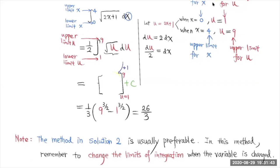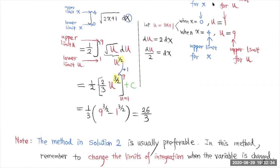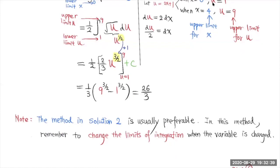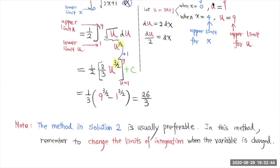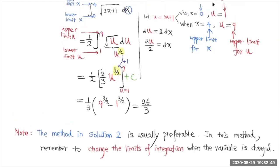Now after you have done this, we find the antiderivative of the square root of u. We write this as u to the 1/2 power, increase the exponent by 1, and multiply by the reciprocal of this exponent. We know that u goes from 1 to 9. Simplify — this is 1/3. Now substitute 9 into u and substitute 1 into u to evaluate. And that is 26 over 3. So this method is actually more preferable, but be sure to remember to change the upper and lower limit of integration once you do the u-substitution.